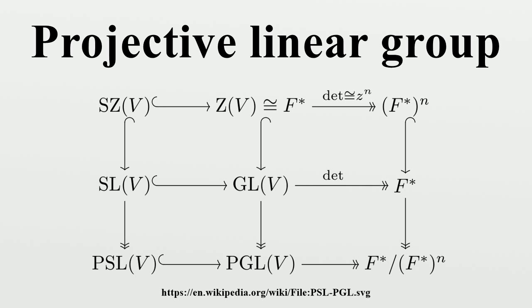PGL acts 2-transitively on projective space. This is because two distinct points in projective space correspond to two vectors that do not lie on a single linear space, and hence are linearly independent, and GL acts transitively on k-element sets of linearly independent vectors.